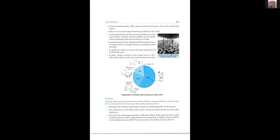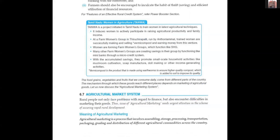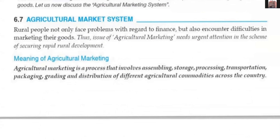Agricultural marketing is a process that involves several things: assembling crops and produce, then storage of goods, then processing of goods, then transportation of goods, and then distribution of different agricultural commodities across the country to different dealers and customers.